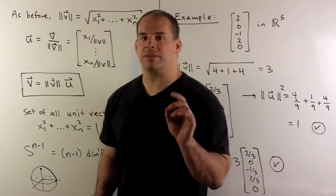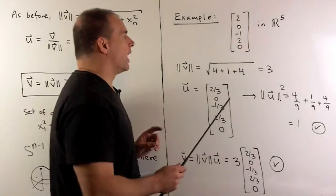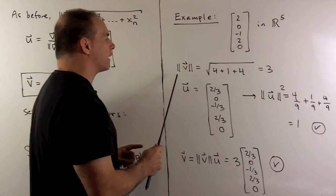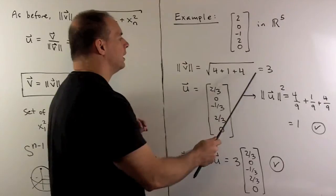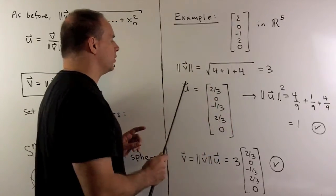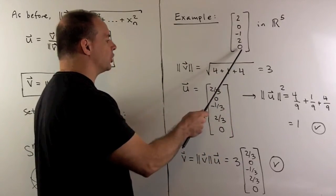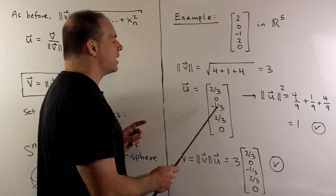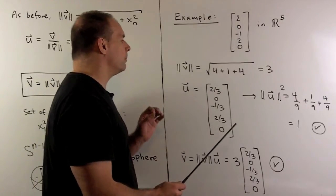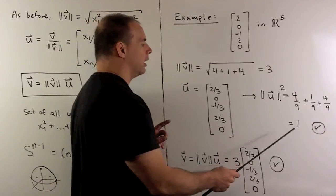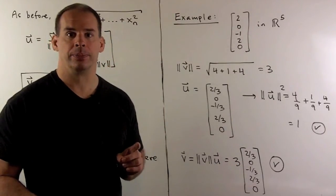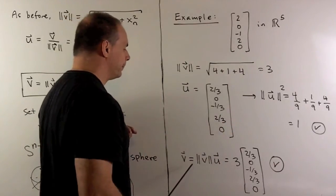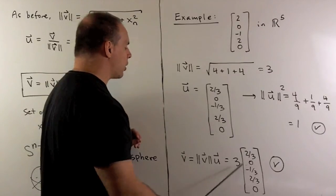For one last factorization example, let v = (2, 0, −1, 2, 0) in R5. Taking the length of our vector, we get 3. Dividing our vector by 3 gives the unit vector pointing in the same direction. Taking the length of this unit vector: 4/9 + 1/9 + 4/9 = 1, so the length is one and we have a unit vector as expected. Then we take our u and multiply it by our length, and we see that we get back our original vector.